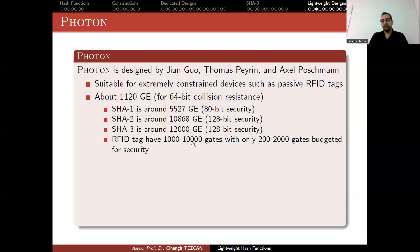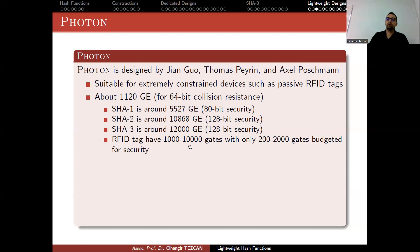RFID tags generally have between 1,000 to 10,000 gates. You might say if I have 10,000 gates I can put SHA-1 there, but the RFID tag is not just for hashing — you will put a lot of algorithms and capabilities there. Only 10 to 20 percent of those gates are allowed for security, so you generally have between 200 and 2,000 gate equivalents. This is why you need a lightweight design.